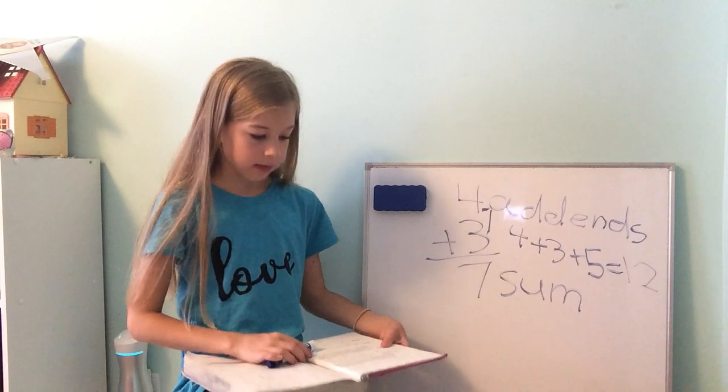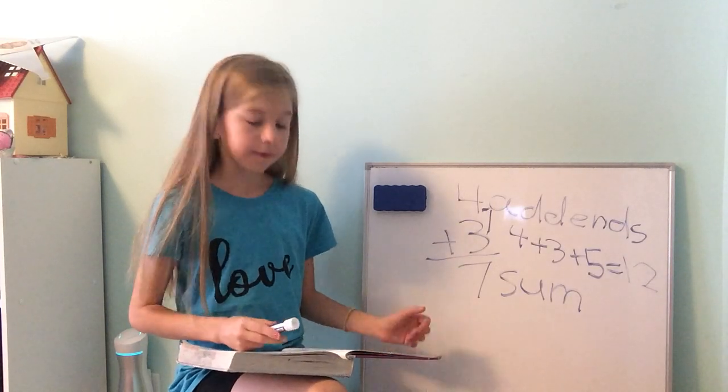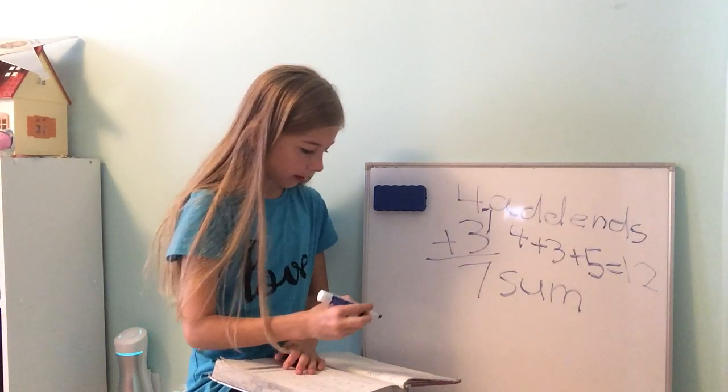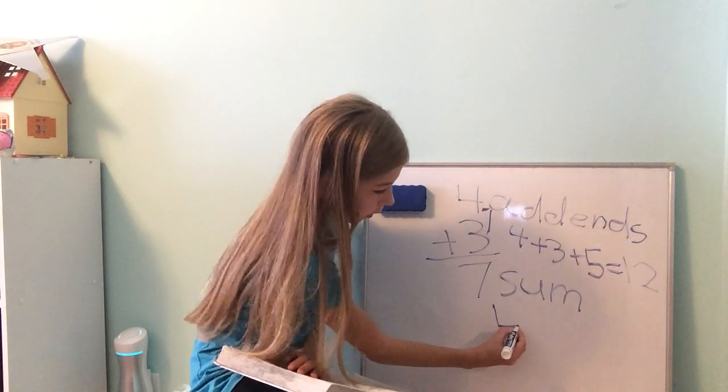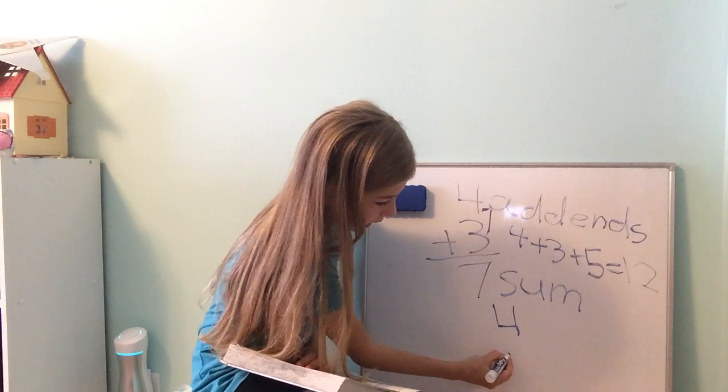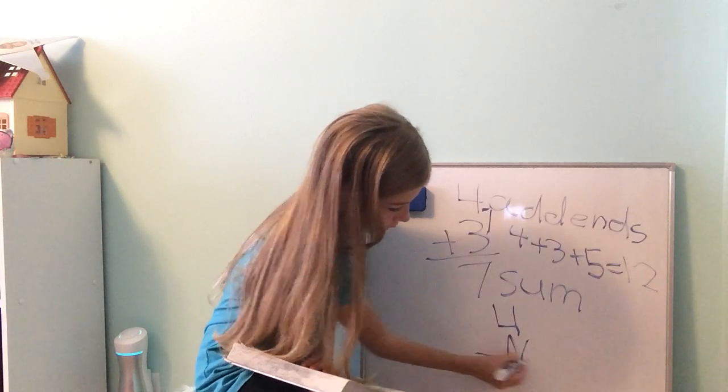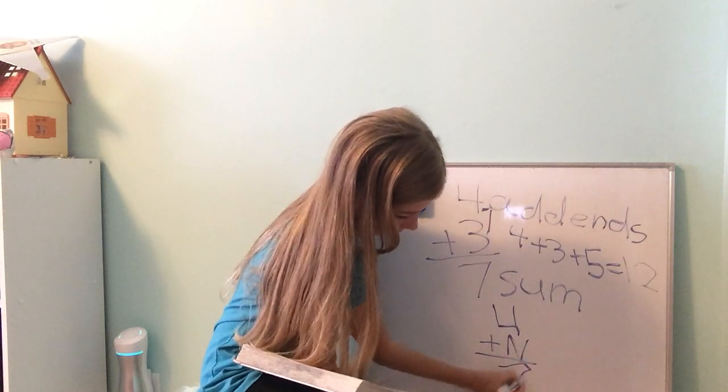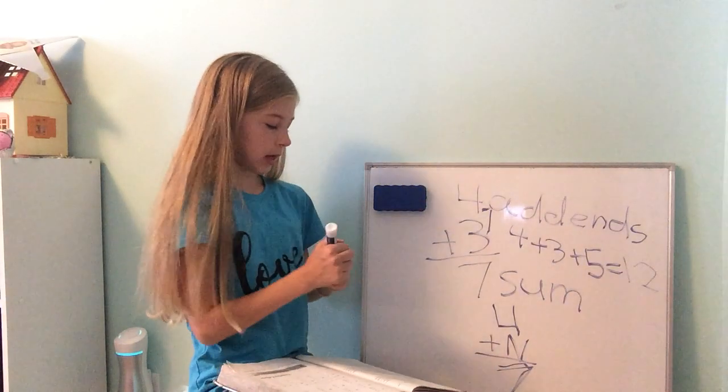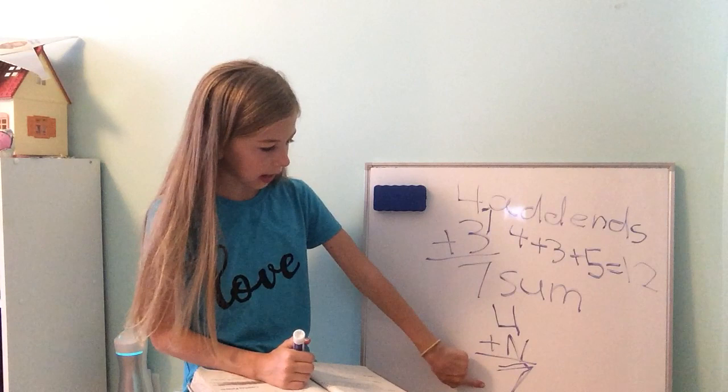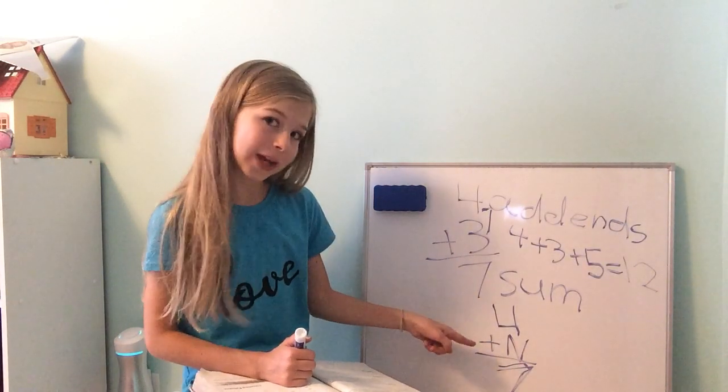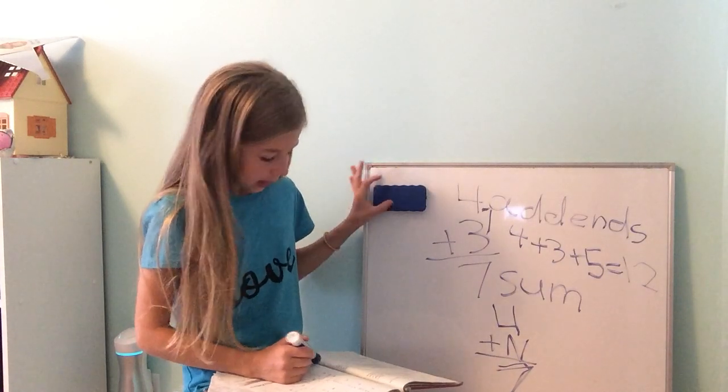When an addend is missing and the sum is given, the problem is to find the missing addend. So let's say 4 plus n equals 7. In this case, we would use 7 minus 4 equals 3.